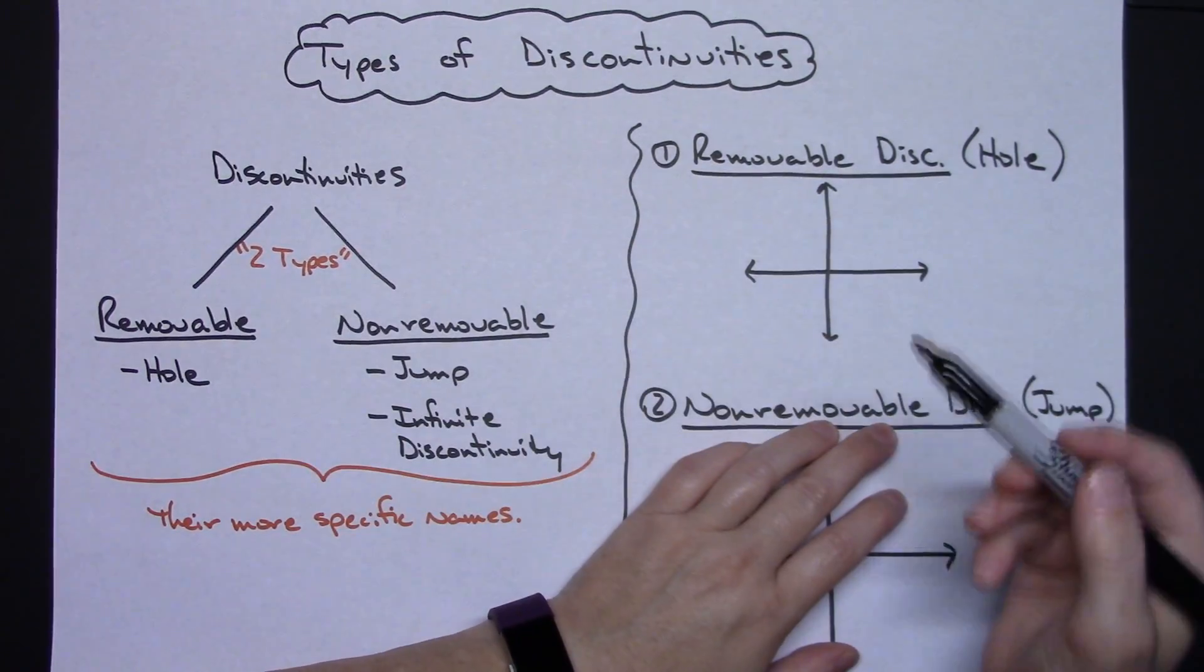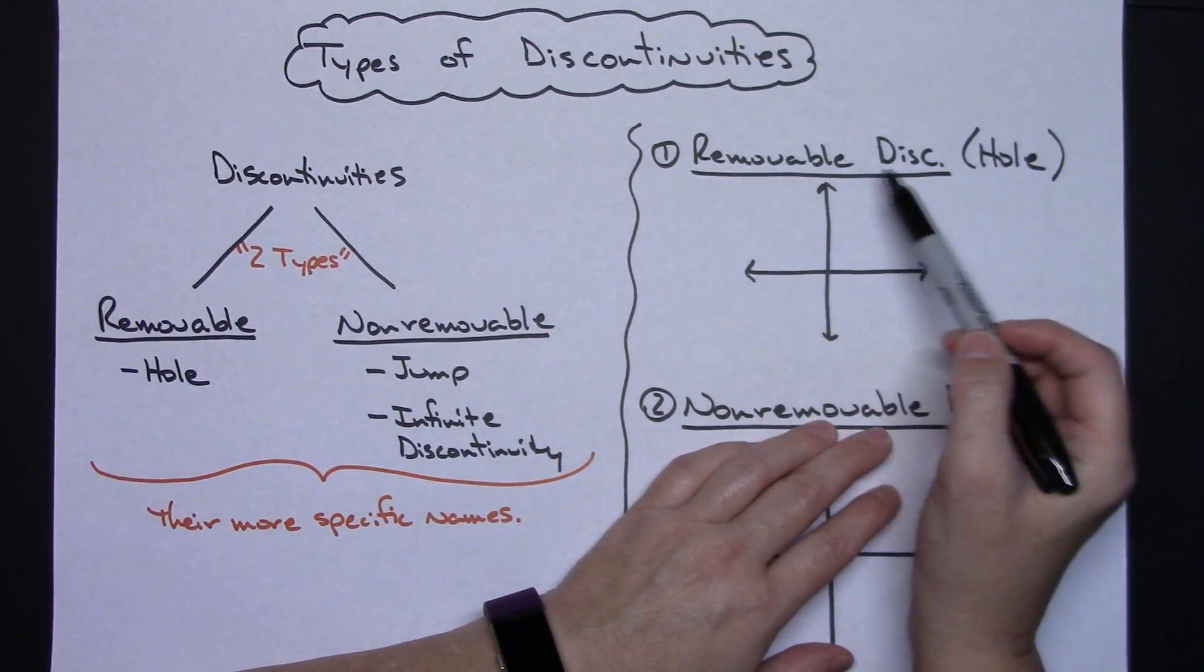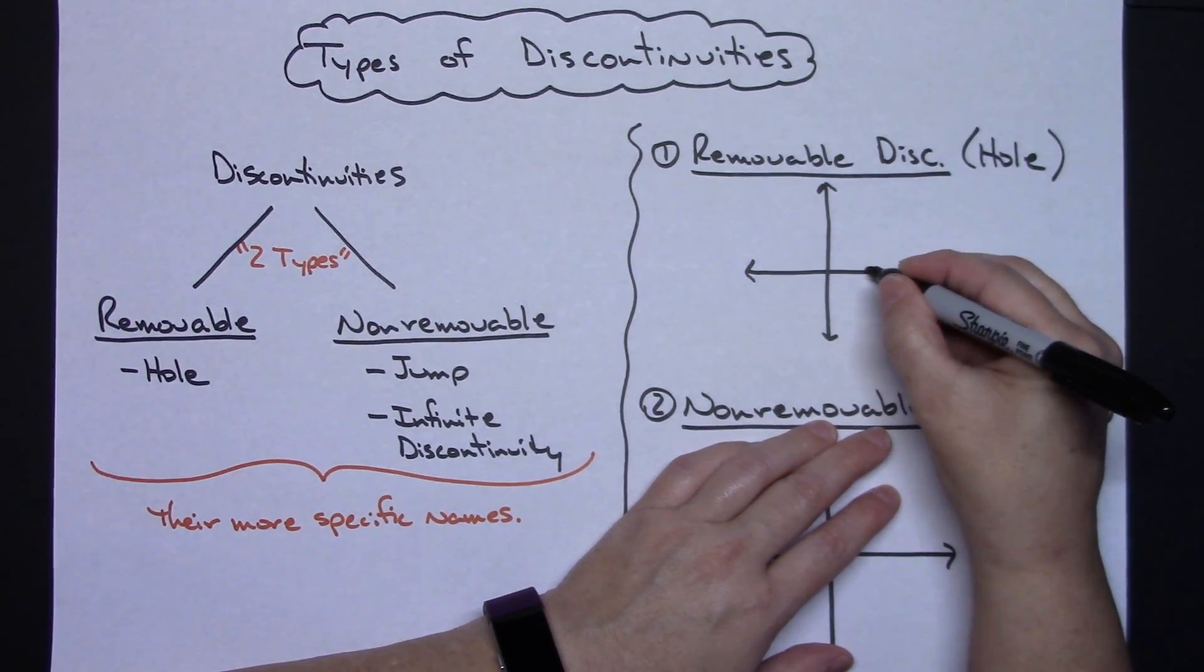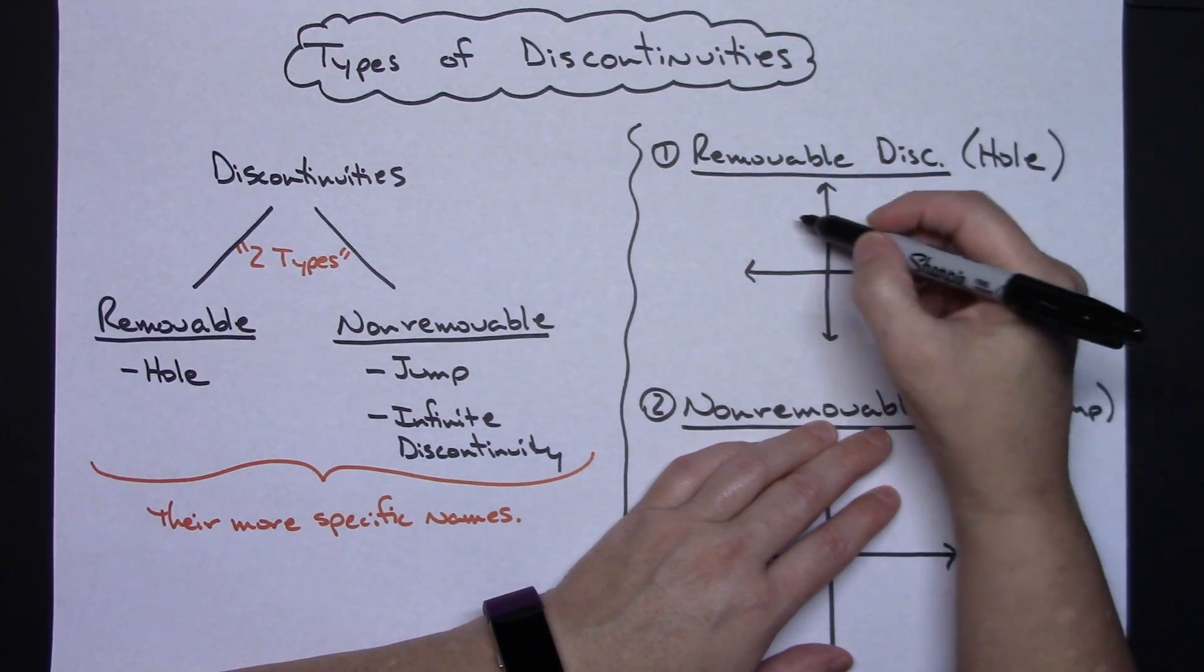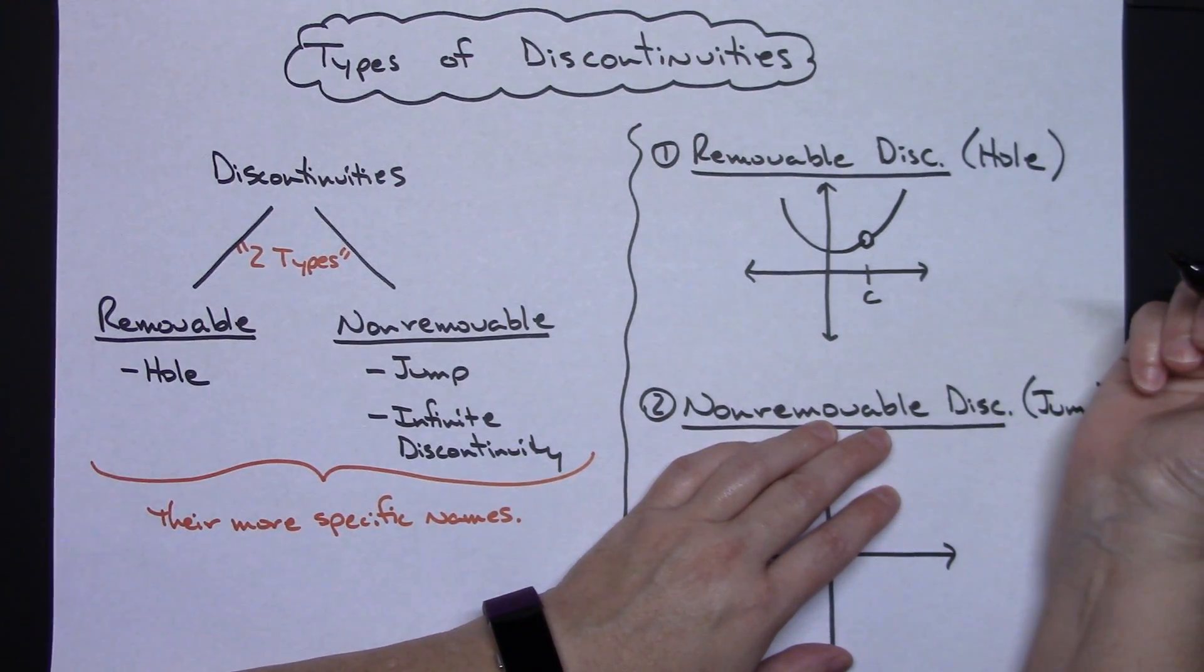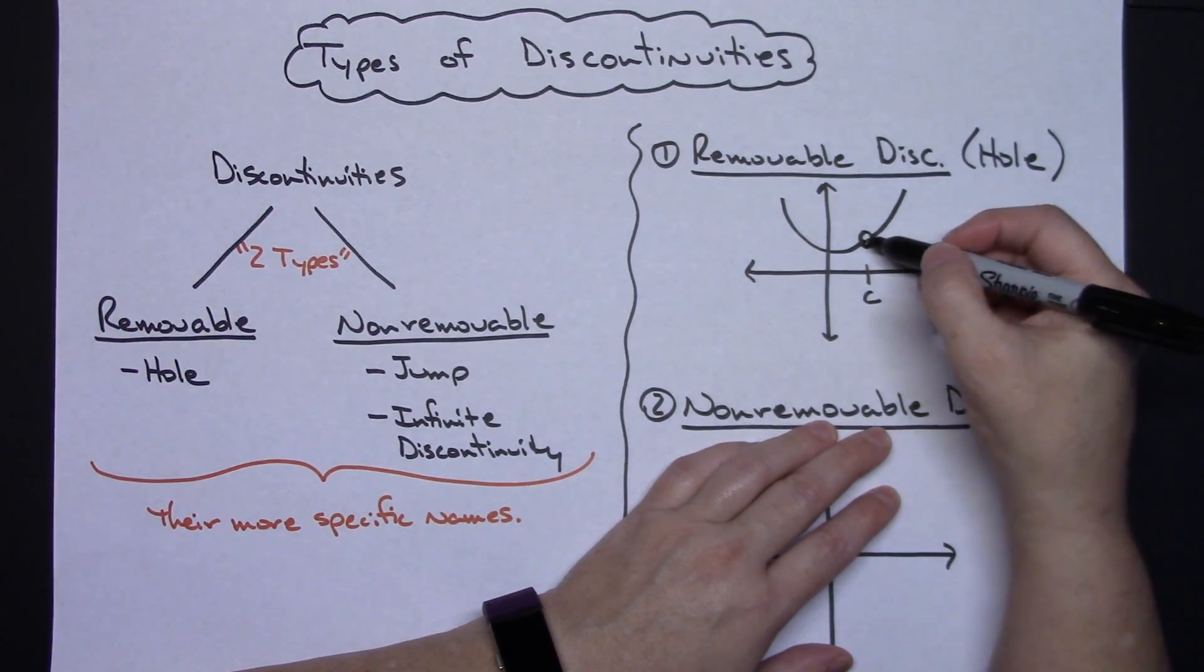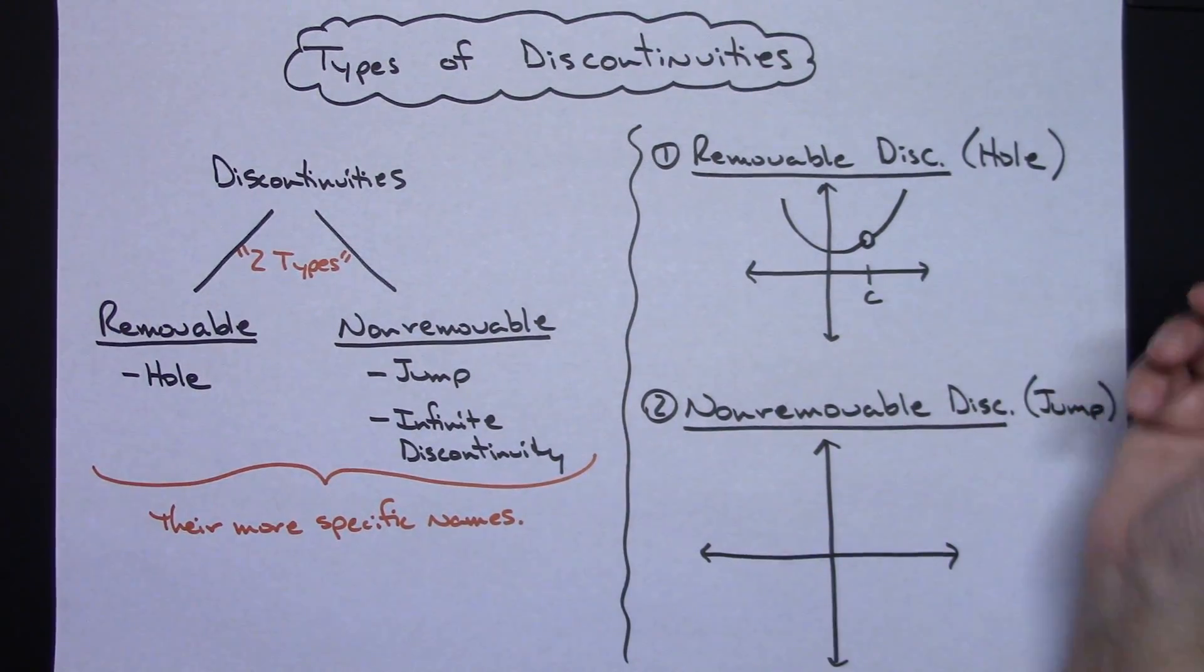Now I want to take a look at each of these individually here. For the hole, a removable discontinuity is a hole, and in the graph it would look something like this. Maybe I had my removable discontinuity at x equals c, so the graph would come around here, and then there would be a hole in the graph, and then the graph would keep going. Basically that's what a hole looks like. It's definitely a discontinuity that can be repaired by filling in that single point. I could fill it in and make it continuous, so I know it's definitely a hole.